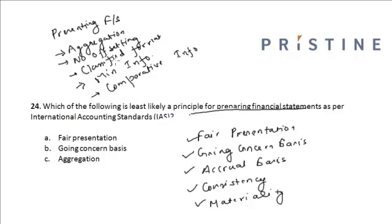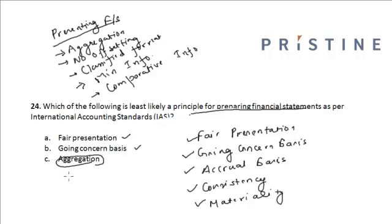These are the five principles of presenting financial statements, and those are the five principles for preparing financial statements. If you look at the options, fair presentation and going concern basis are principles for preparing financial statements, whereas aggregation is a principle for presenting financial statements. Hence aggregation is not part of the principles for preparing financial statements, and option C is correct.